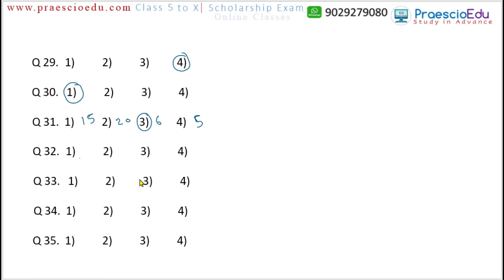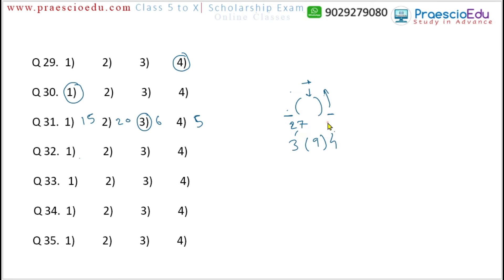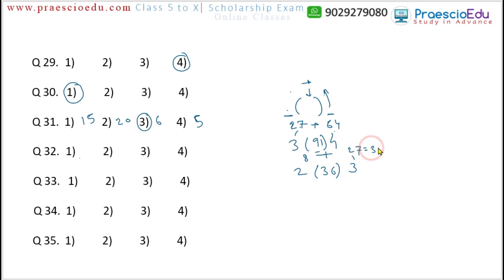Question 32: the pattern is — take the cube of the left digit and the cube of the right digit, add them, and the result should equal the number in brackets. For option 1: (3,91,4) → 3³=27 and 4³=64, 27+64=91 ✓. But for option 2: (2,36,3) → 2³=8 and 3³=27, 8+27=35, not 36. So option 2 is the different one for question 32.